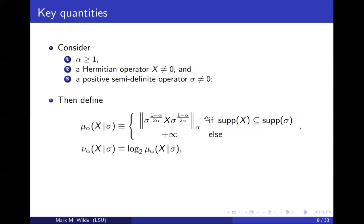Because of the inverse of sigma, you need to consider a support condition: if the support of X is contained in the support of sigma; otherwise we set it to be plus infinity. If you've studied recent works in quantum information theory, you might have run across sandwiched Rényi relative entropy — there are similarities between this mu_alpha quantity and the sandwiched Rényi relative entropy. That's mu; and if we take the binary log, we get nu. The reason we use nu is because it's going to be a quantity from which we get the alpha logarithmic negativity — nu is for negativity.